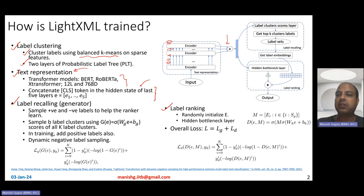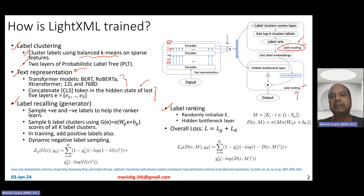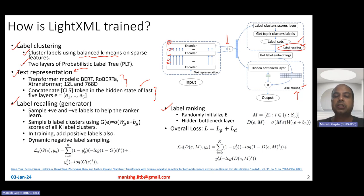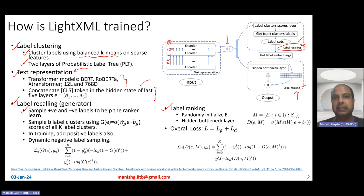There are two more modules: label recalling and label ranking. Label recalling is like shortlist generation, but rather than a static shortlist, they use a dynamic shortlist. The label recalling module and label ranking module are trained together, which makes the label recalling dynamic. The label recalling module helps generate a limited number of positive and negative labels along with every data instance, because with millions of labels, training on all labels would be prohibitively expensive.